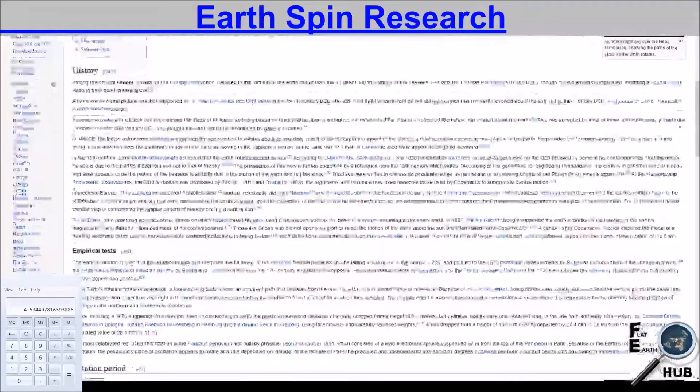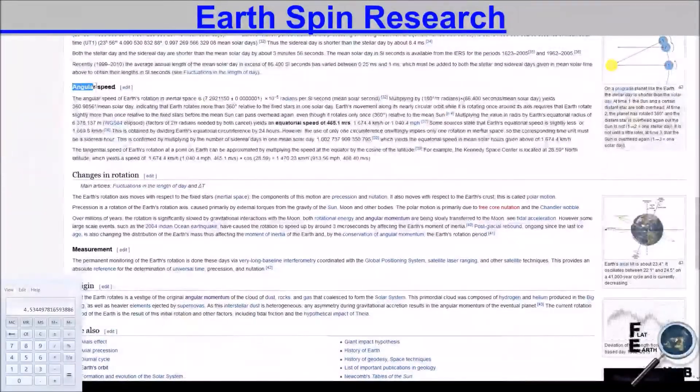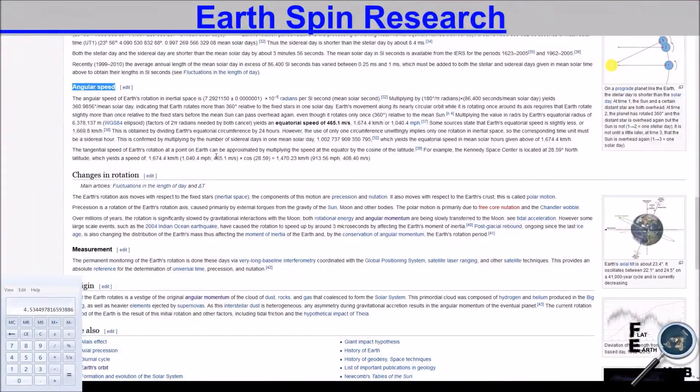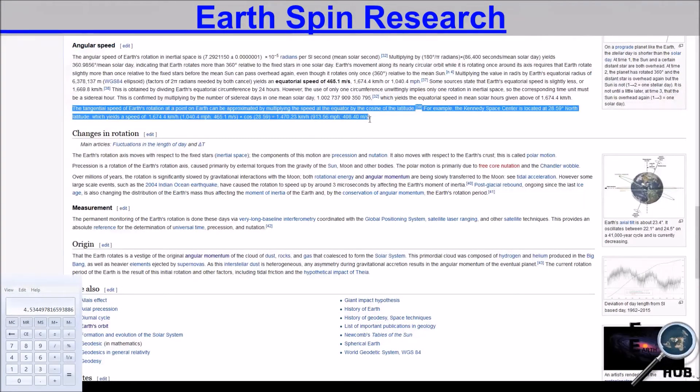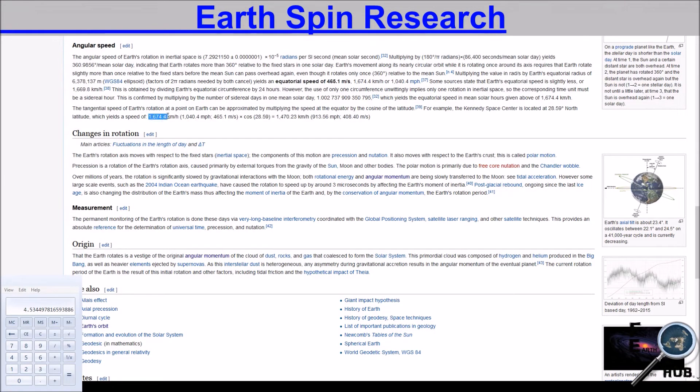We go back to the Earth's rotation. We scroll down to angular speed. We look through here, and you can see that the most accurate speed that they list here is the 1,674.4 kilometers per hour. So we're going to be using that as our speed, our current speed. And then use our multiplier to times that speed to average the speed of what it was 4.54 billion years ago.